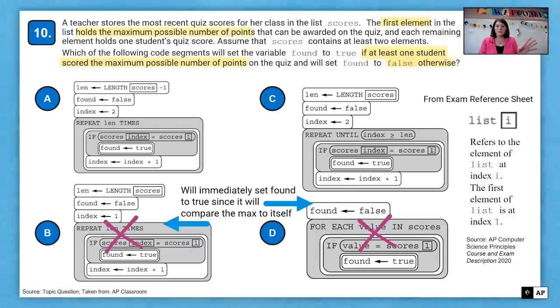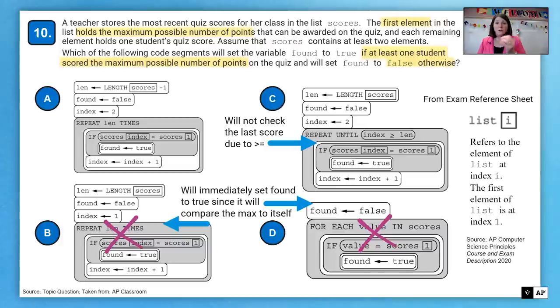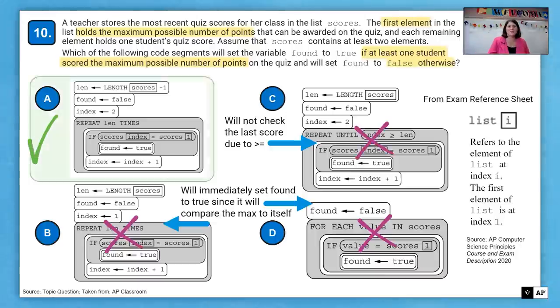So those two get eliminated. And then C will not check the last score due to the greater than or equal to. So it will never get to that last score and be able to check it. So that's a bad choice. And so that means our answer is A, which we'll go through all of them and compare, again, everything after that maximum to see if a student hit the max.